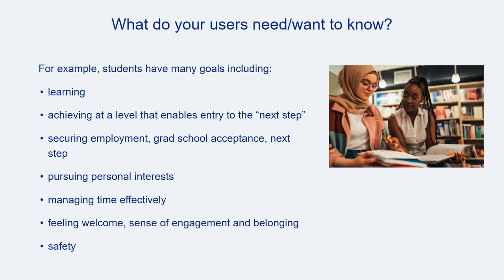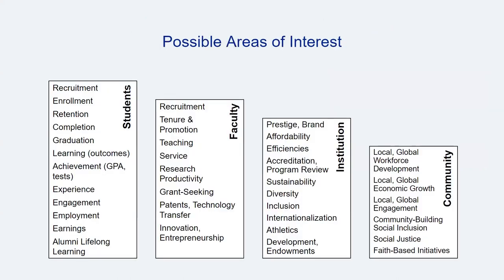Failing to understand the users that are the focus of an assessment project — either library users or users who are decision makers seeking information to take actions based on results — can introduce critical flaws throughout the assessment process that may yield flawed and unusable results. While this is not an exhaustive list by any means, this chart can serve as a starting point for considering what might be areas of interest for various user groups broadly speaking.